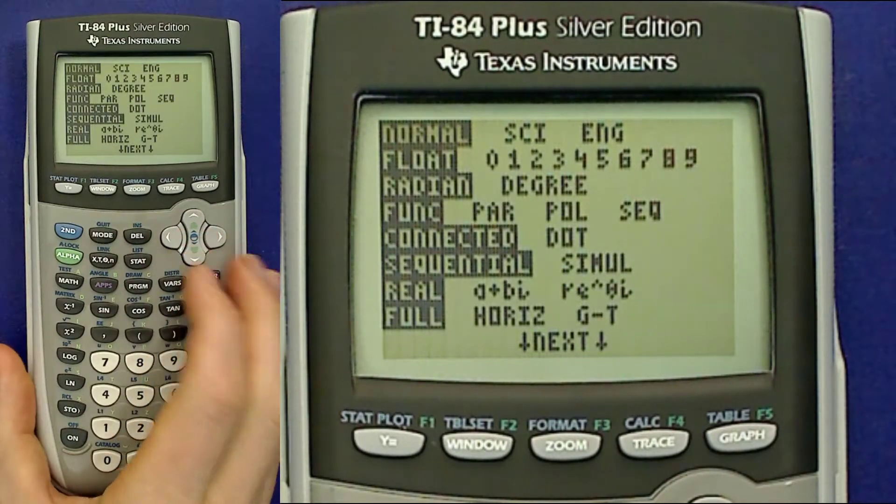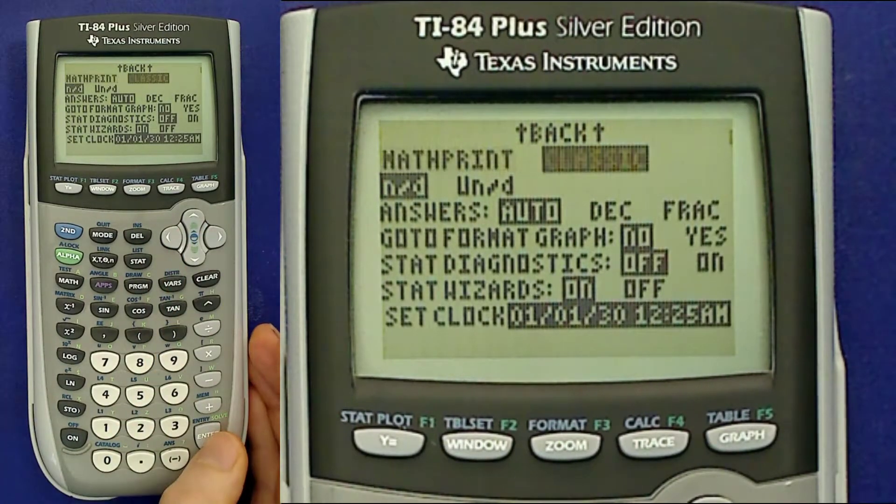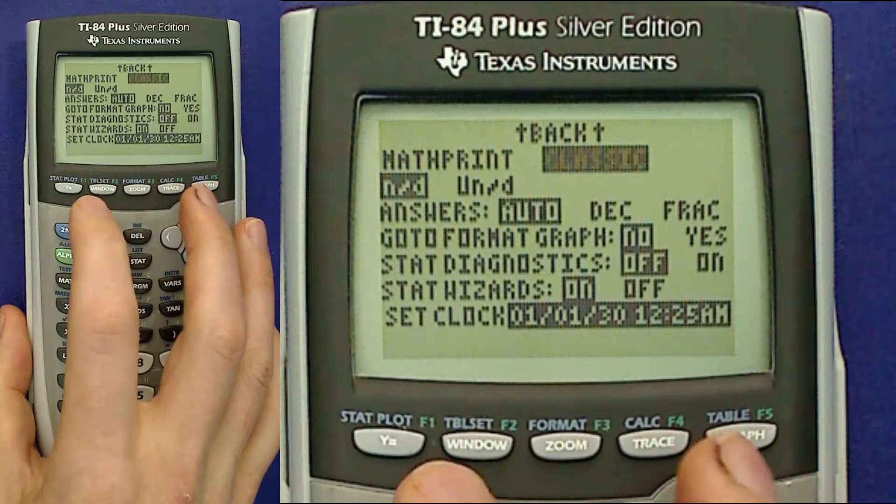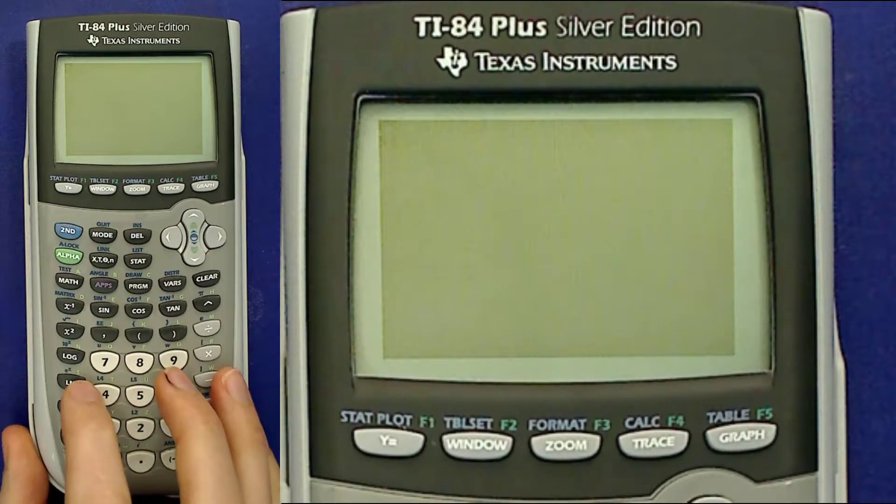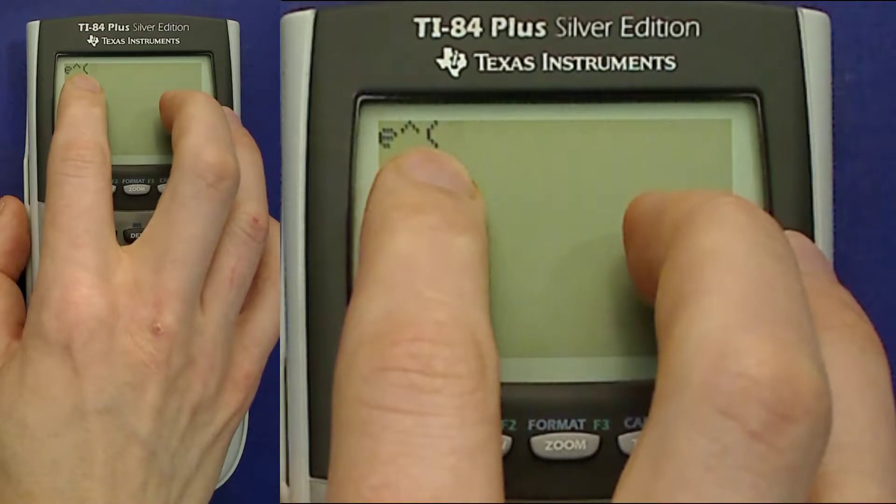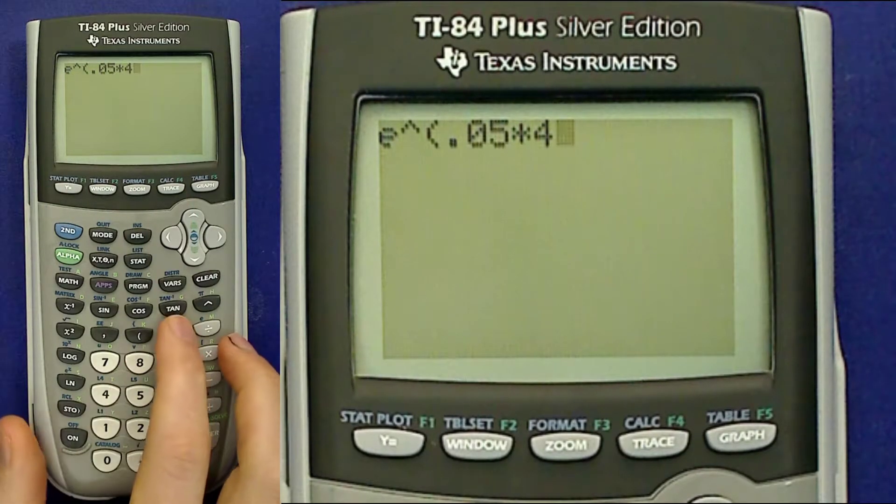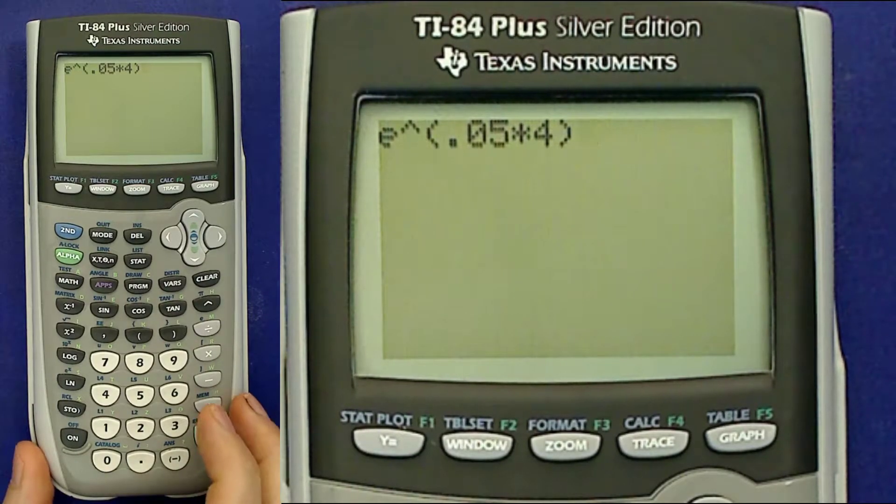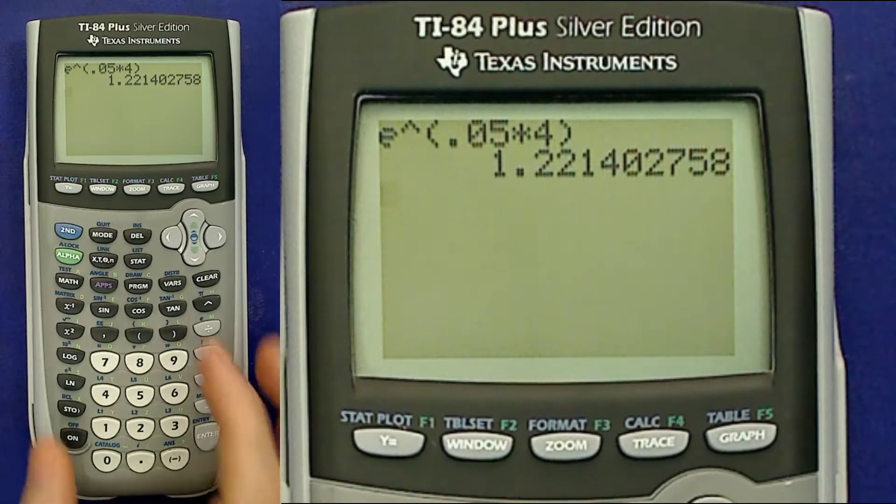If your calculator uses only left to right notation, then that is still the key to use but it looks a little different. It has an e, a hat, and a parenthesis, and you should close up the parenthesis like that. So there's the same calculation done in left to right notation.